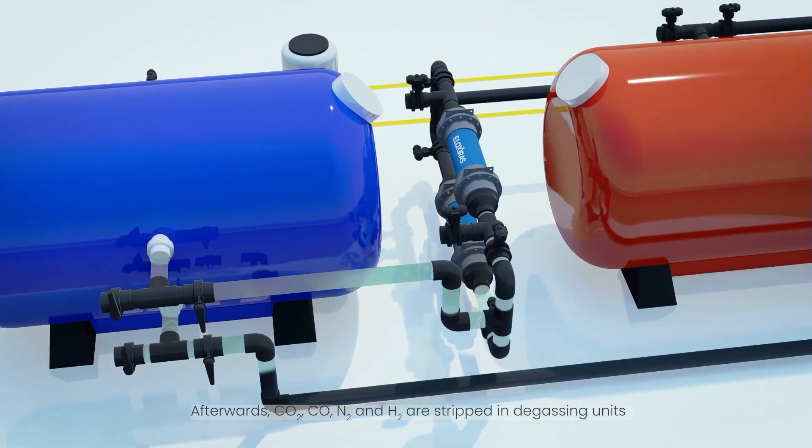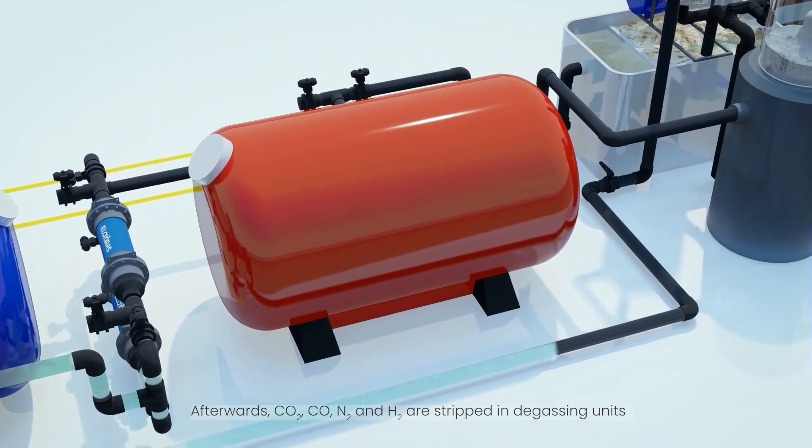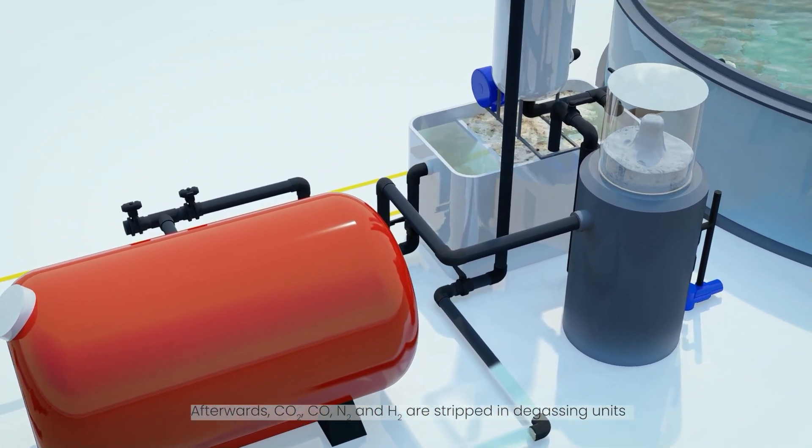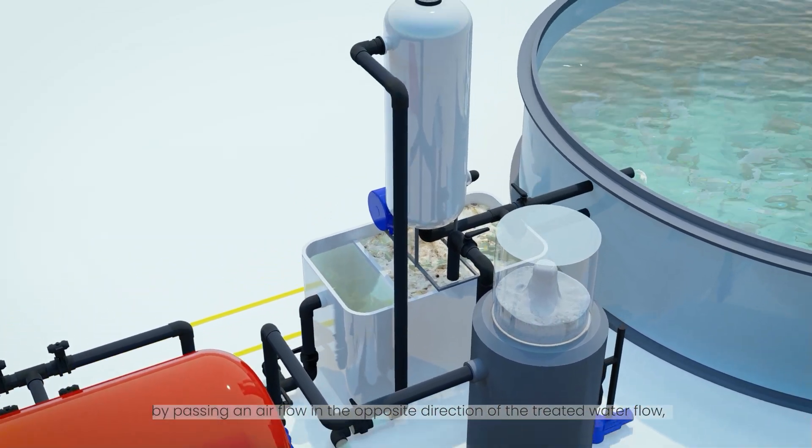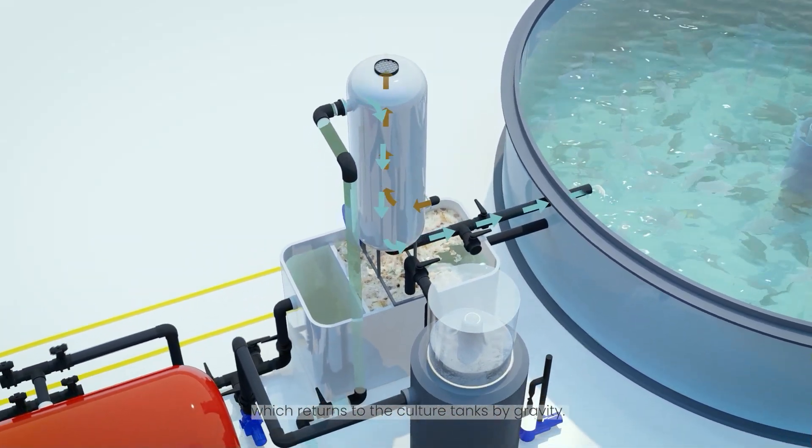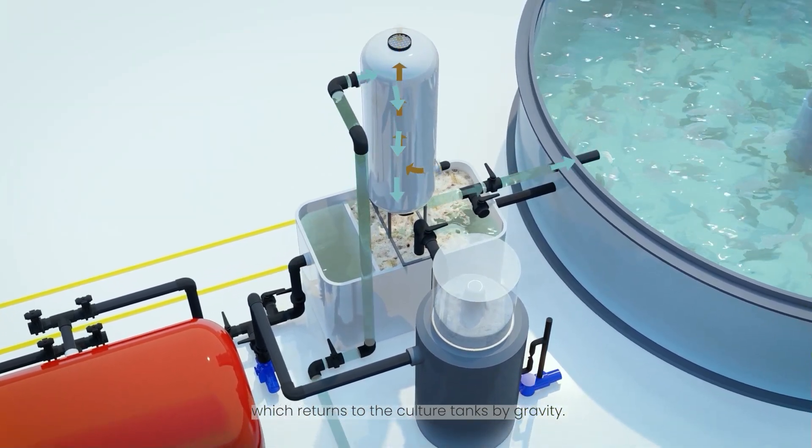Afterwards, CO2, CO, N2 and H2 are stripped in degassing units by passing an airflow in the opposite direction of the treated water flow, which returns to the culture tanks by gravity.